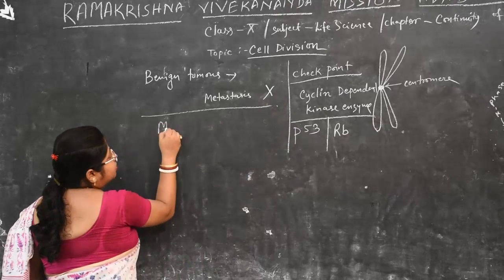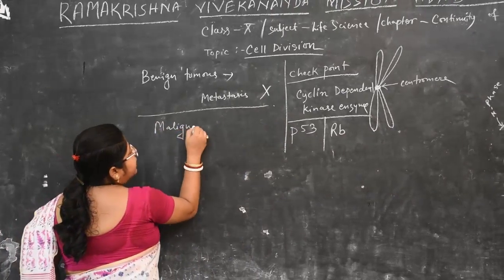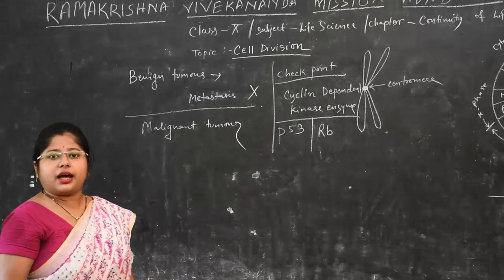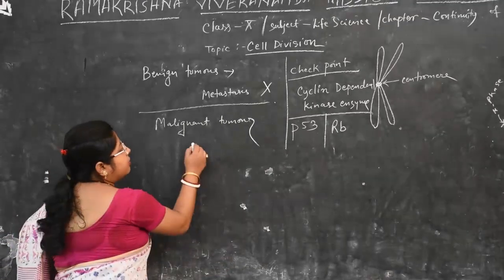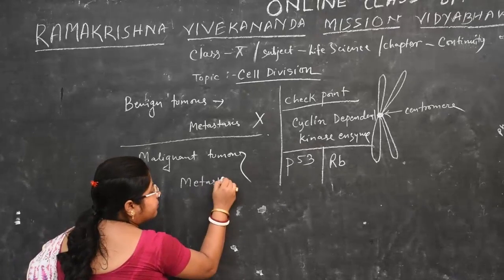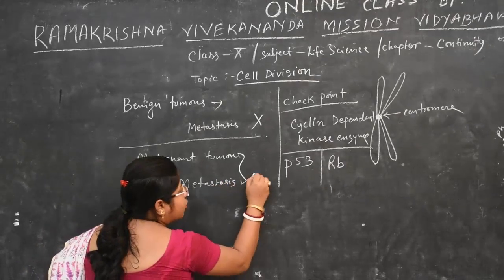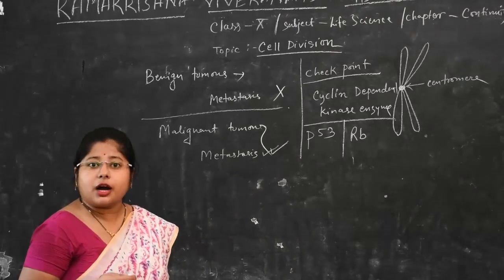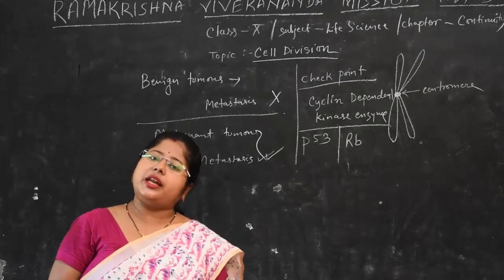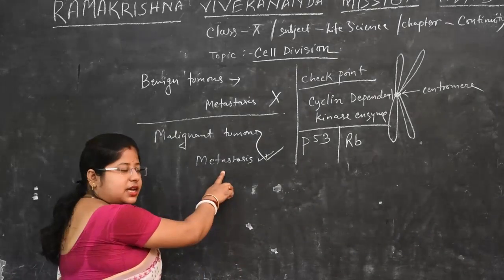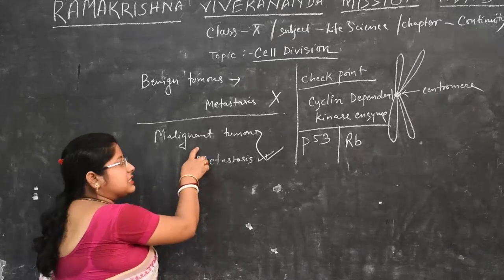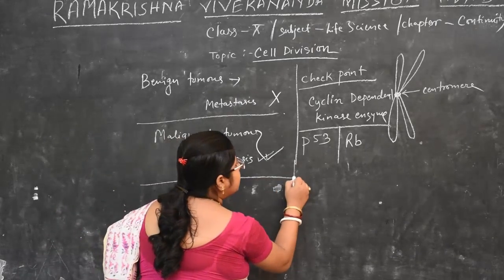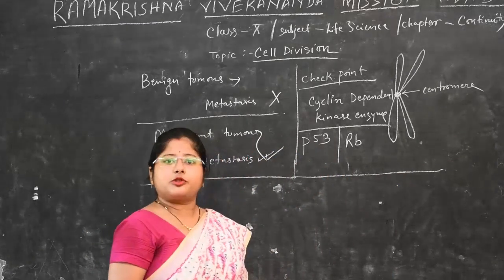The second type is the malignant tumor, which is cancerous. In malignant tumors, metastasis occurs — the spreading of abnormal cells from the origin site to any part of the body. Because of this metastasis, malignant tumors are known as cancerous in nature. This completes the topic of cell cycle.